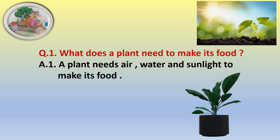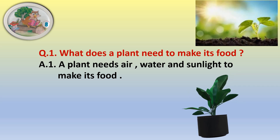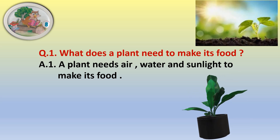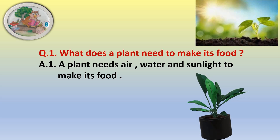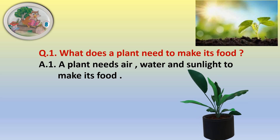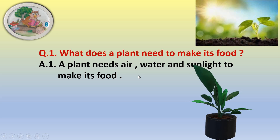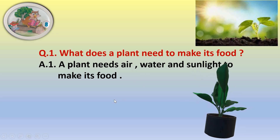A plant needs air, water, and sunlight to make its food. These are the three main things which are required by the plant.